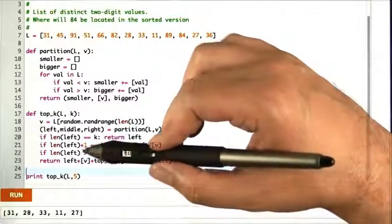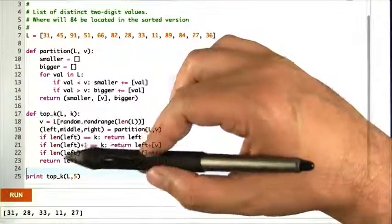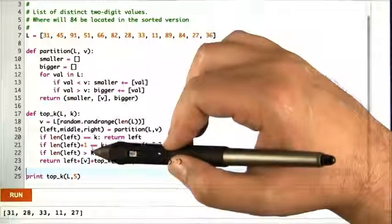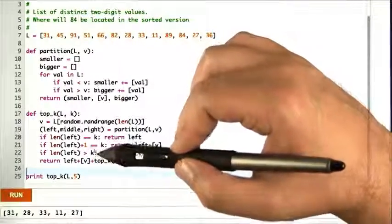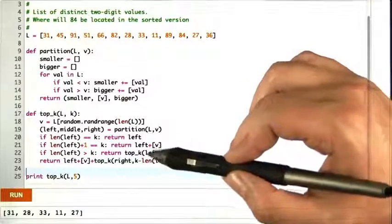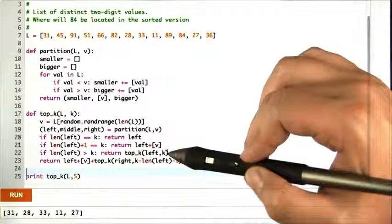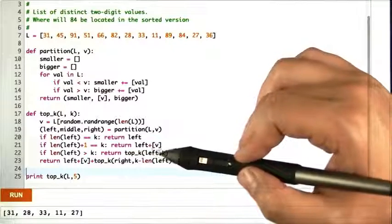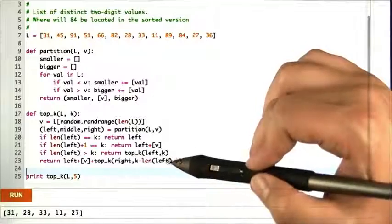It gets trickier when the stuff on the left is bigger than k. Well, we were looking for the top k, but we just found something more than the top k, so we have to whittle it down further. We can do that just by calling top k on only the elements on the left - we just want the k best elements on the left. So we've made some progress, but haven't completely solved the problem yet.